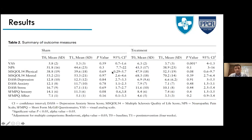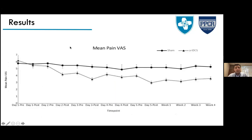The VAS trajectory graph shows both groups starting at similar scores at baseline. The active tDCS group's scores decrease over time — lowest around day five or week two — and then show a tendency to increase. The results report a statistically significant decrease up to week two, but not beyond that compared with the sham group.